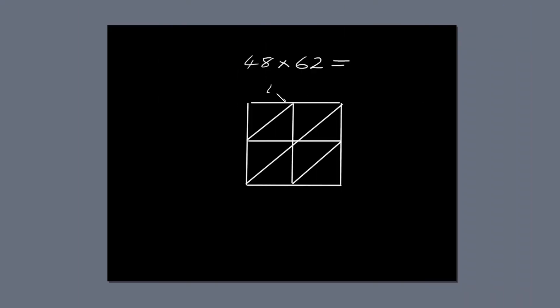Next, write the first number, 48, along the top of the box so each digit lines up with a column. Write 62 down the right-hand side of the box so each digit lines up with a row. Now we're ready to do some multiplication and fill in the blanks with our answers.